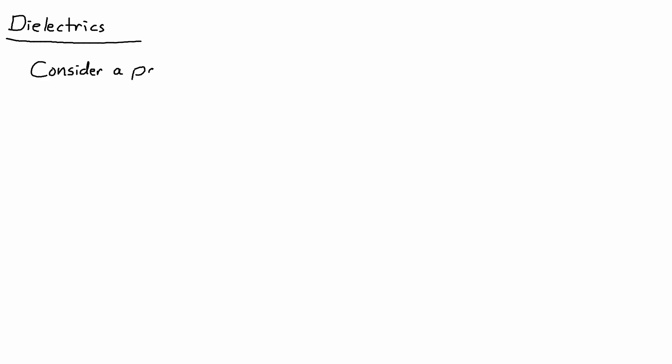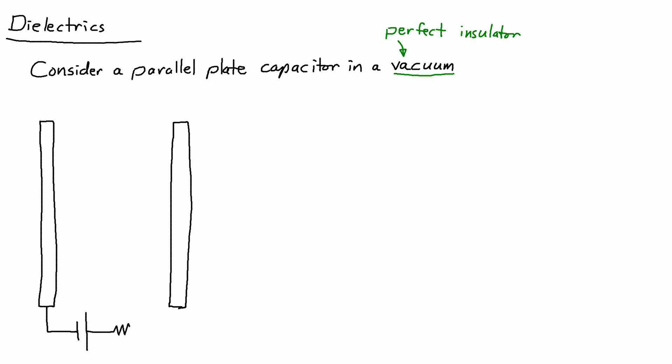We start out by considering a parallel plate capacitor in a vacuum. And remember that a vacuum is a perfect insulator. And when we connect the parallel plates with the EMF and the resistor, then it makes one side positive and the other side negative. And this creates an electric field.